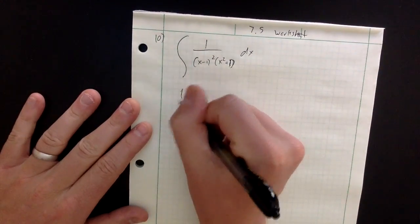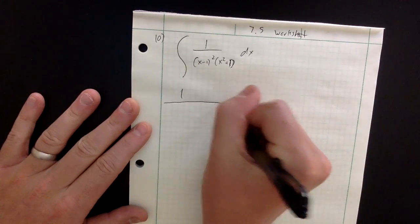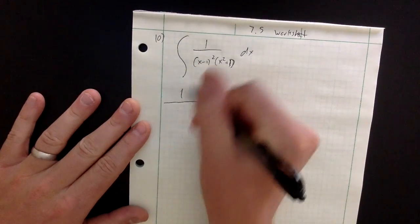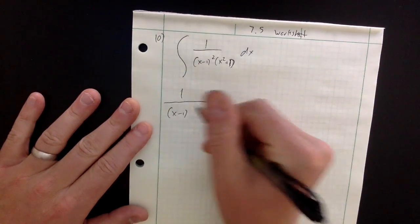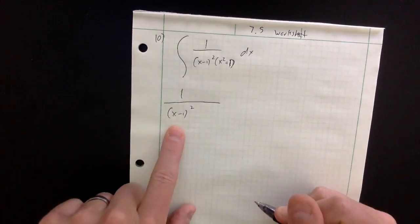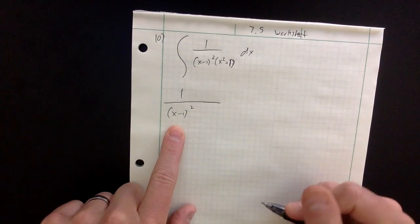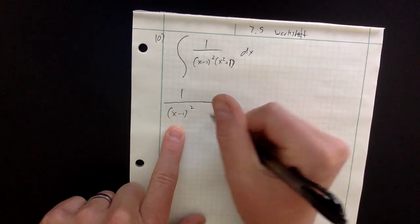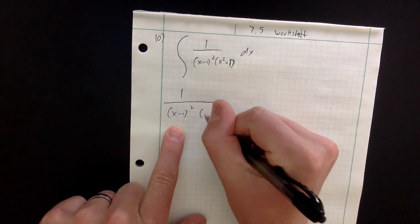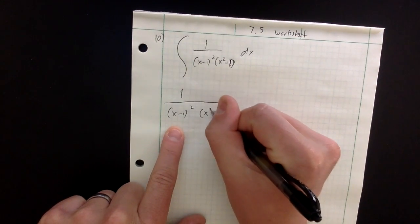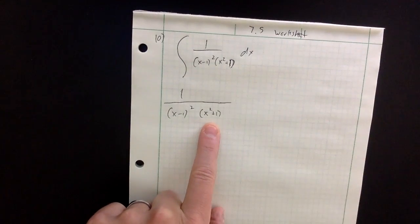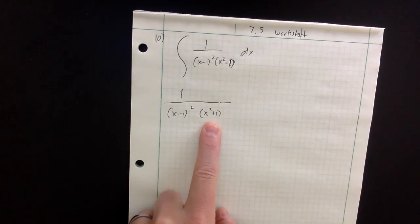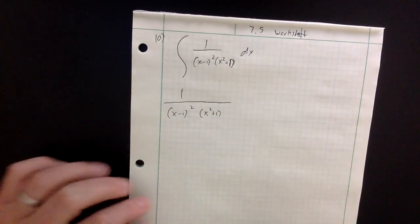I first want to look at the denominator — ignore the integrand for a moment. Notice x minus 1 squared: that is a linear term repeated. And then x squared plus 1, the other part of the denominator, is a quadratic term that is irreducible — you cannot factor that anymore.